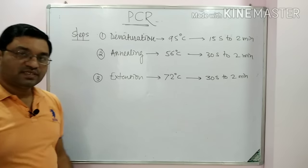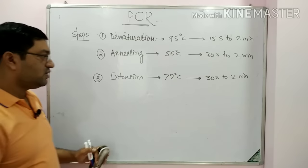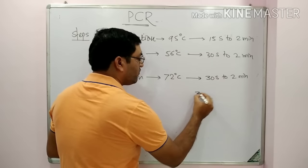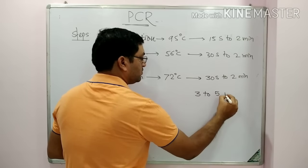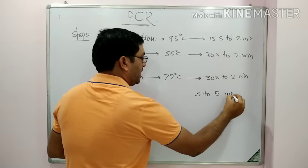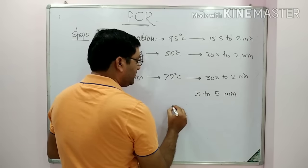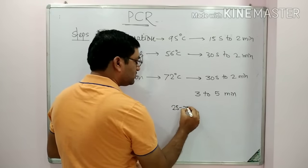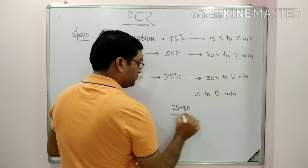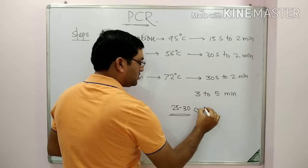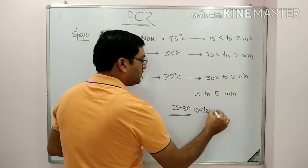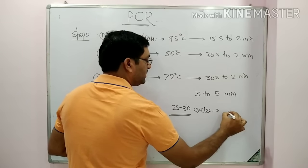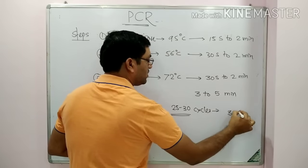Overall, for one step of a PCR cycle, we need 3 to 5 minutes. And for 25 to 30 cycles, we require 3 to 6 hours.